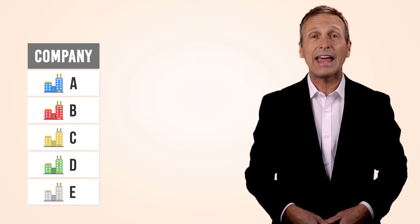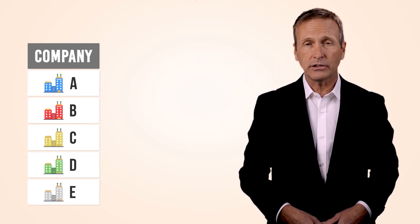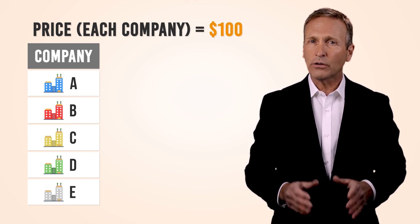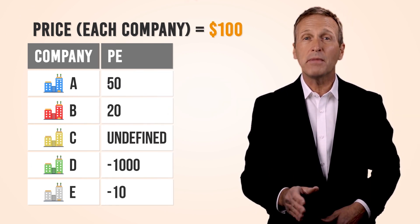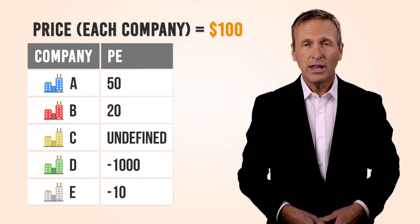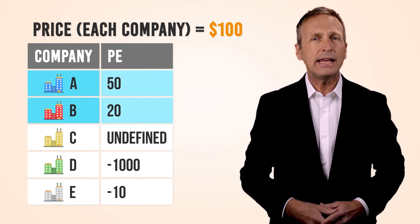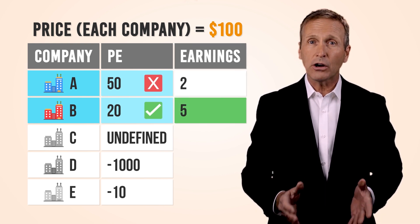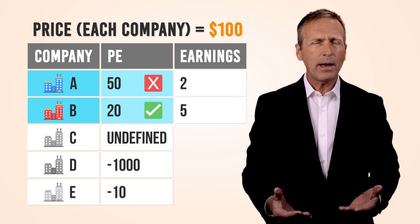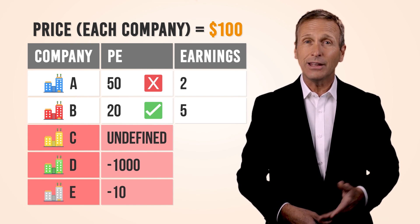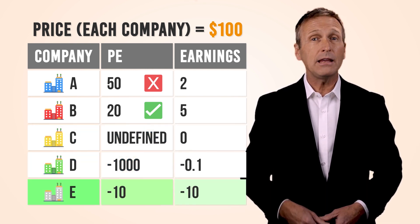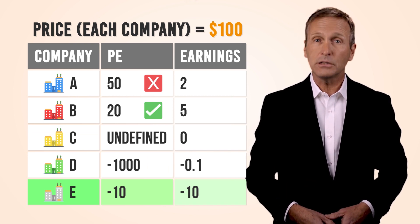Assume there are five companies — A, B, C, D, and E. All companies share the same characteristics and trade at $100 each. You use PE ratio to make your investment decision. Between company A and B, B is the better option, and you agree because B earns more. But how about company C, D, and E? Well, it looks confusing. You might want to go for company E, but E turns out to be the worst.